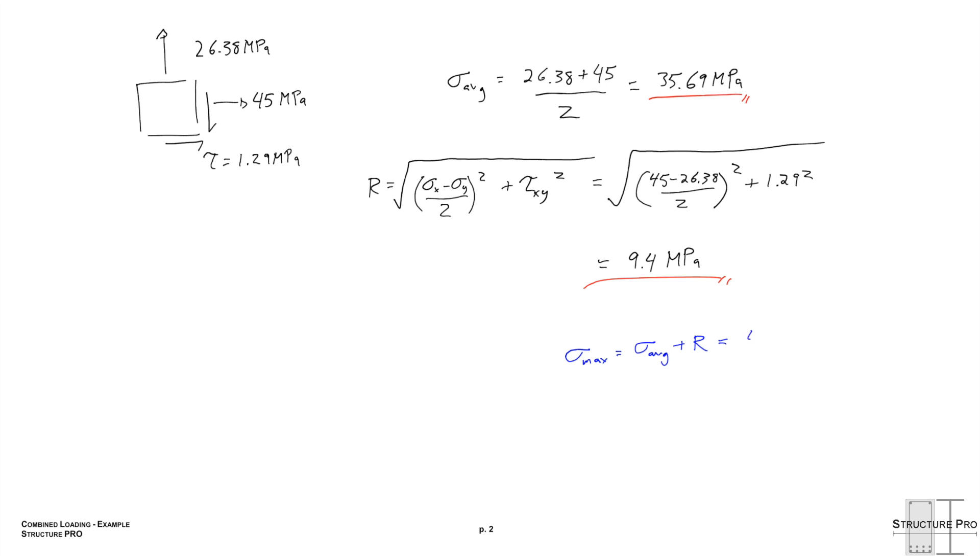A lot of math—9.4 MPa. Sigma max we know is the average plus r, just like sigma min is the average minus r. So for our maximum normal stress we have 45.1 MPa, and we know that our maximum in-plane shear stress is just equal to r, or 9.4 MPa.